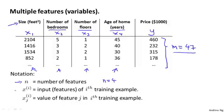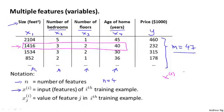I'm also going to use x superscript i to denote the input features of the i-th training example. As a concrete example, x superscript 2 is going to be a vector of the features for my second training example. And so x superscript 2 here is going to be a vector 1416, 3, 2, 40, since those are my four features that I have to try to predict the price of the second house.